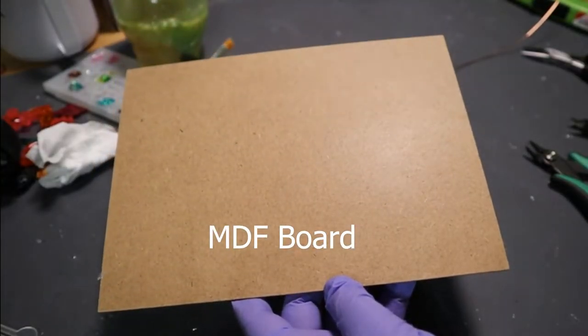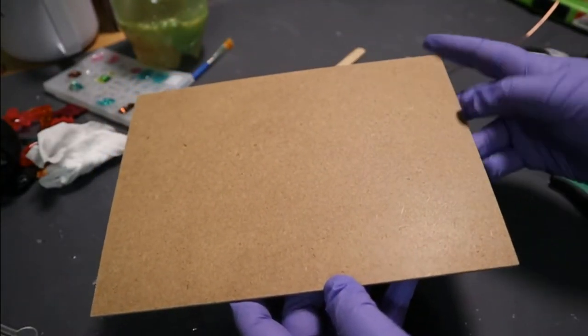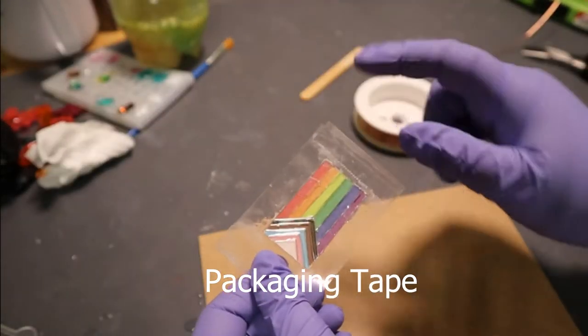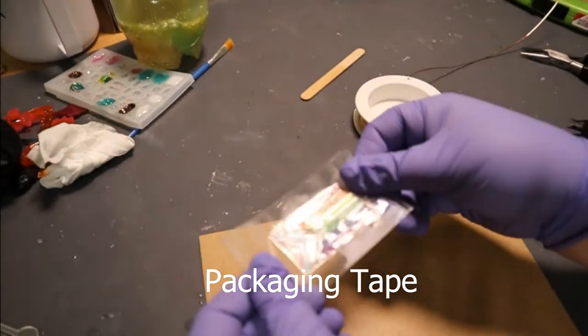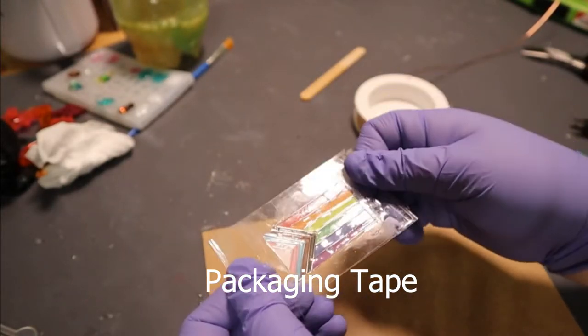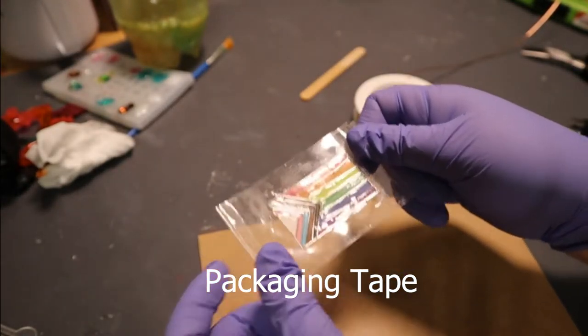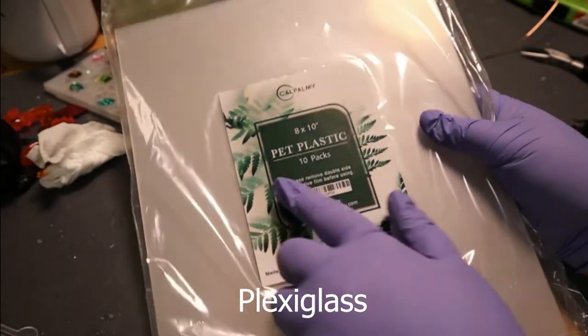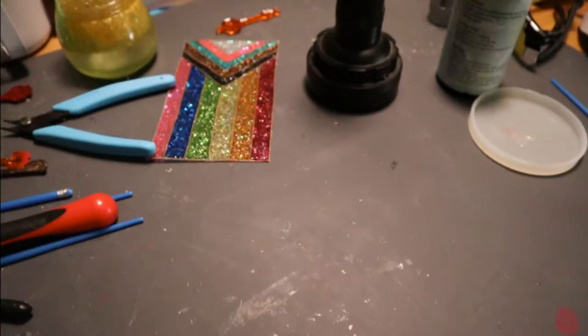The first thing we need is something to make the piece on. I chose MDF board. If you don't have MDF board, you can also use clear packaging tape. One thing to warn about is that this is more flexible and it can cause the piece you're making to warp. Plexiglass also makes a really good option. The only one I had on hand was pretty thin, so I opted to use MDF.